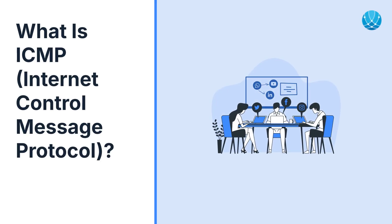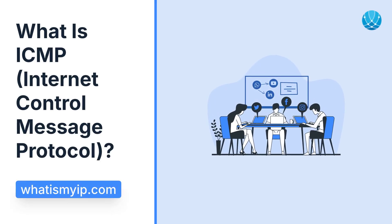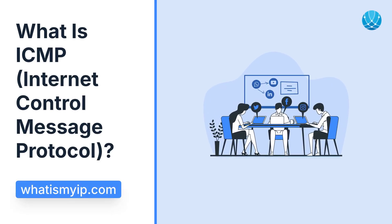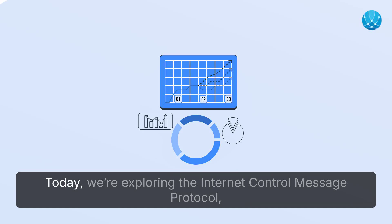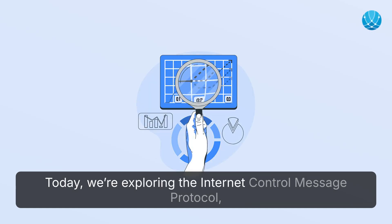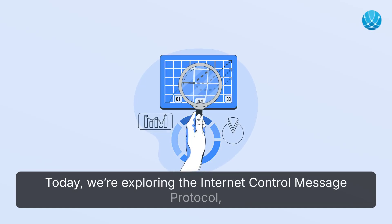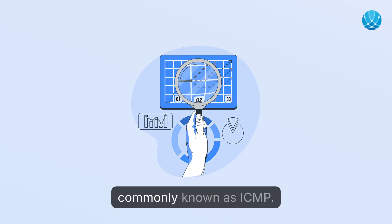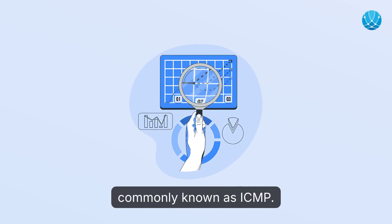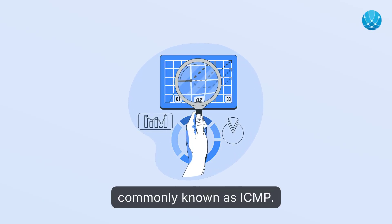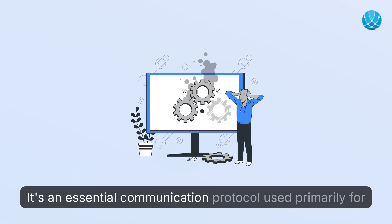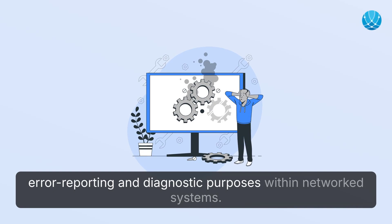What is ICMP — Internet Control Message Protocol? Today, we're exploring the Internet Control Message Protocol, commonly known as ICMP. It's an essential communication protocol used primarily for error reporting and diagnostic purposes within networked systems.